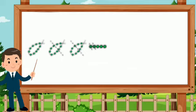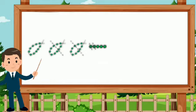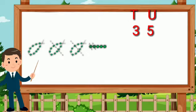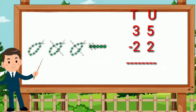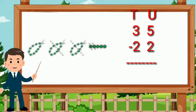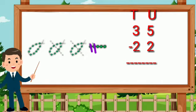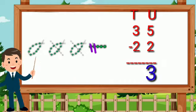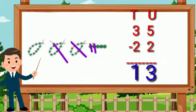Look at the picture and arrange the example and solve it. Here are three strings of ten beads and five single beads. Three tens and five units minus two tens and two units. 35 minus 22: 5 minus 2 equals 3, then 3 minus 2 equals 1. So 35 minus 22 is equal to 13.